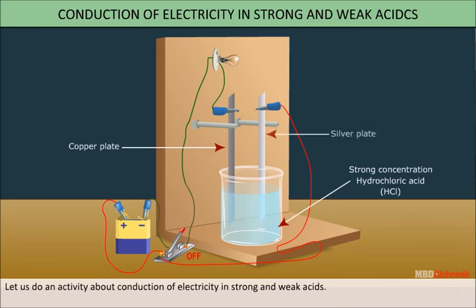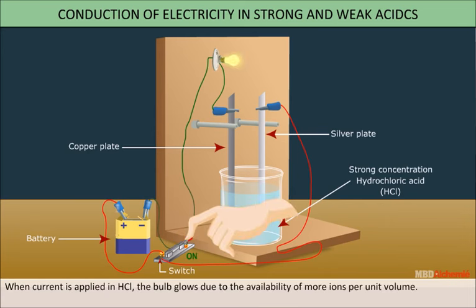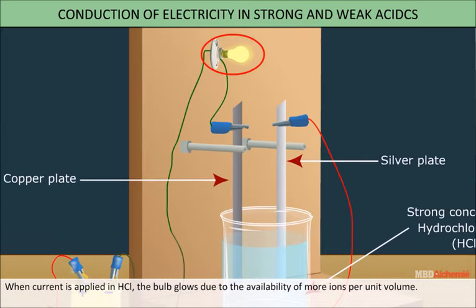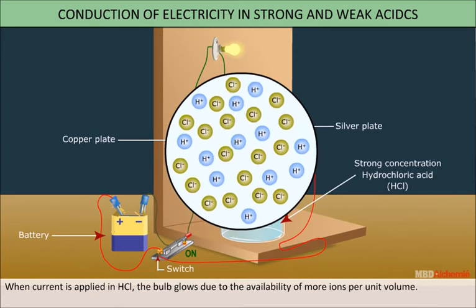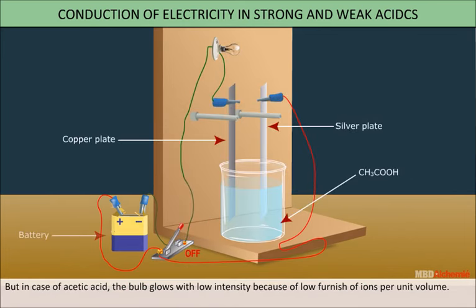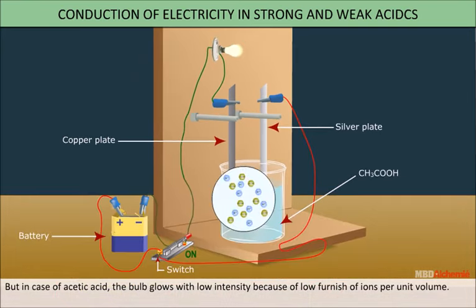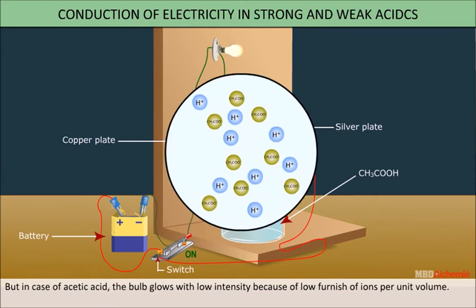Let us do an activity about conduction of electricity in strong and weak acids. Set up an electric circuit as shown here. When current is applied in HCl, the bulb glows due to the availability of more ions per unit volume. But in the case of acetic acid, the bulb glows with low intensity because of low furnishing of ions per unit volume.